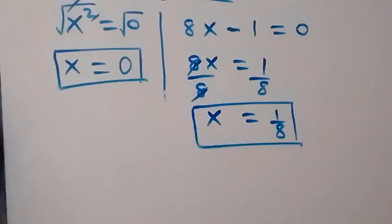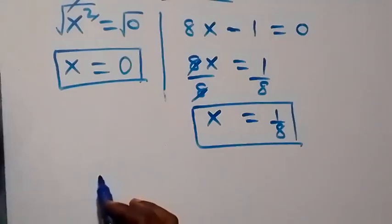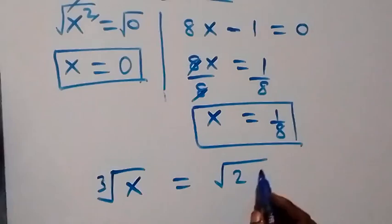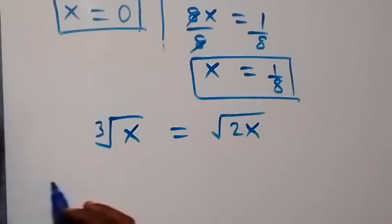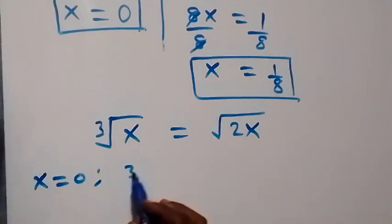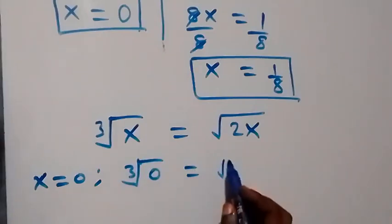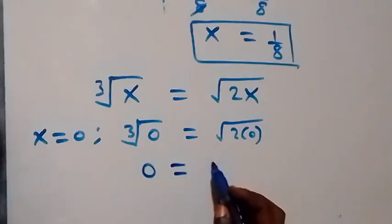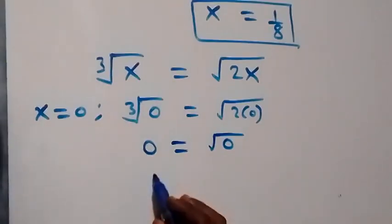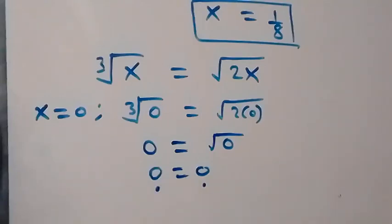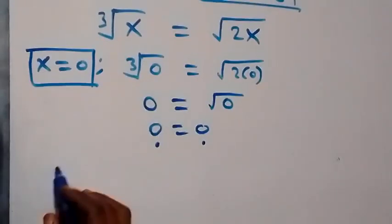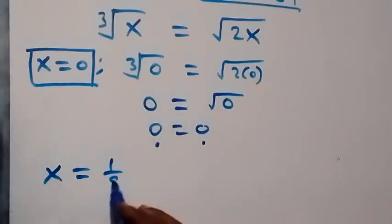So we have two values: x equals 0 and x equals 1/8. Let's check by substituting back into the original equation, cube root of x equals square root of 2x. For x equals 0: cube root of 0 equals square root of 2 times 0. Both sides equal 0, so x equals 0 satisfies the equation.